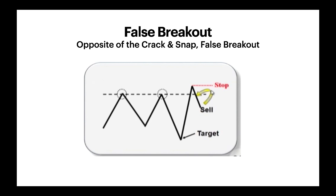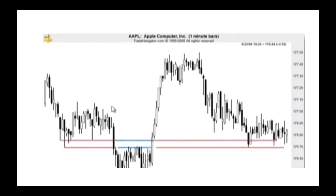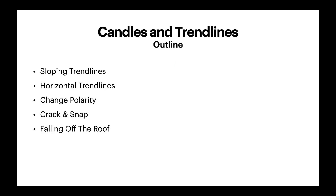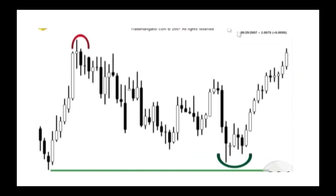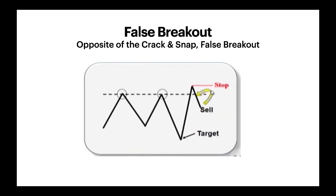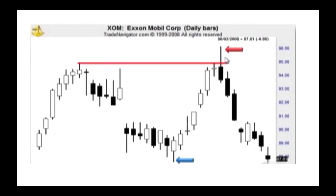Falling off the roof is the opposite of crack and snap — also considered a false breakout, but to the upside. The stock breaks above resistance but then cracks back down. That's where we go short on the stock. The price target is the previous support area, and in the example shown, the target was definitely hit.